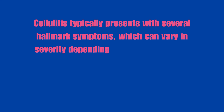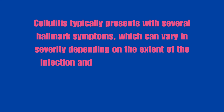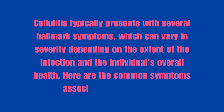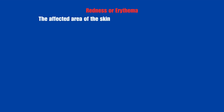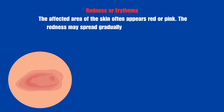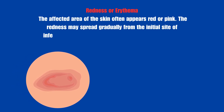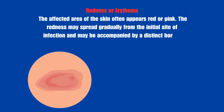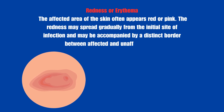Cellulitis typically presents with several hallmark symptoms, which can vary in severity depending on the extent of the infection and the individual's overall health. Here are the common symptoms associated with cellulitis. Redness or erythema: The affected area of the skin often appears red or pink. The redness may spread gradually from the initial site of infection and may be accompanied by a distinct border between affected and unaffected skin.